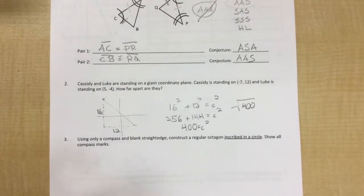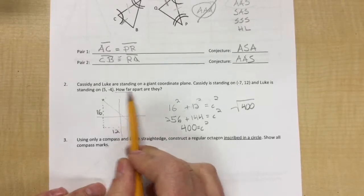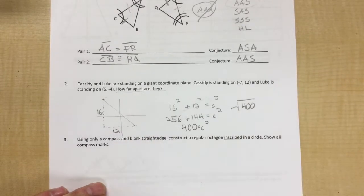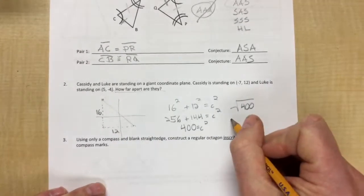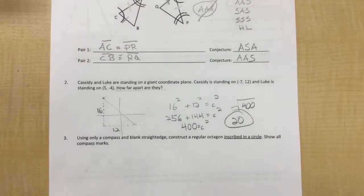Now our last test said leave it as a radical—that just means underneath the square root sign, boom you're done. This straight up says how far apart are they, so you actually have to do the square root of 400 and they are 20 apart.